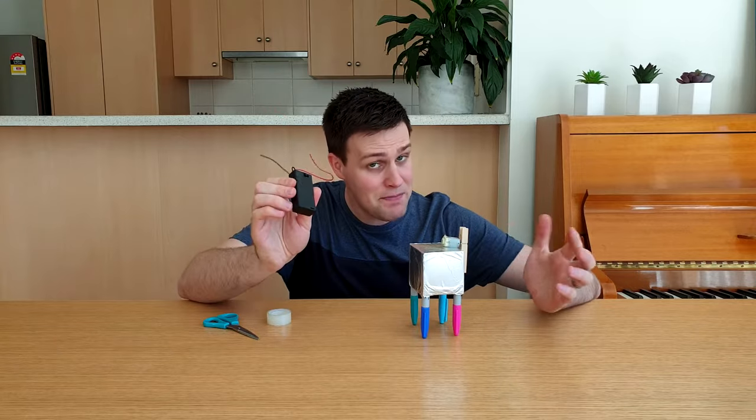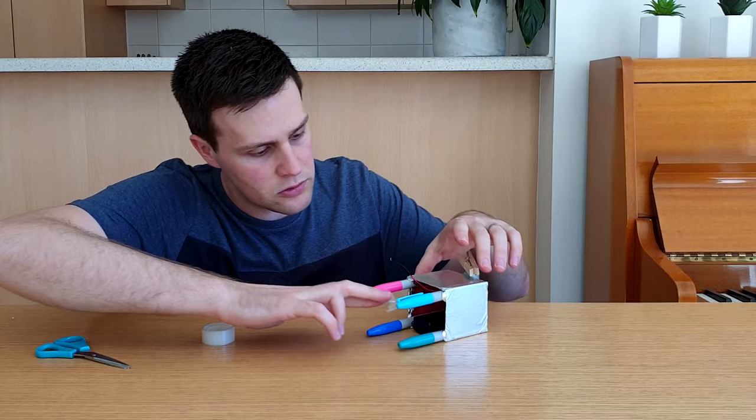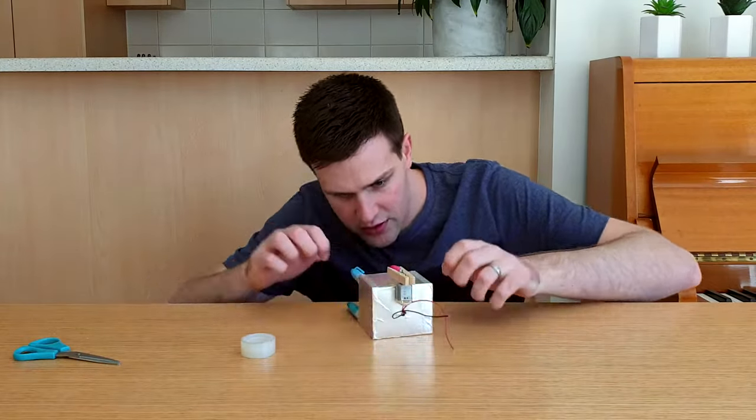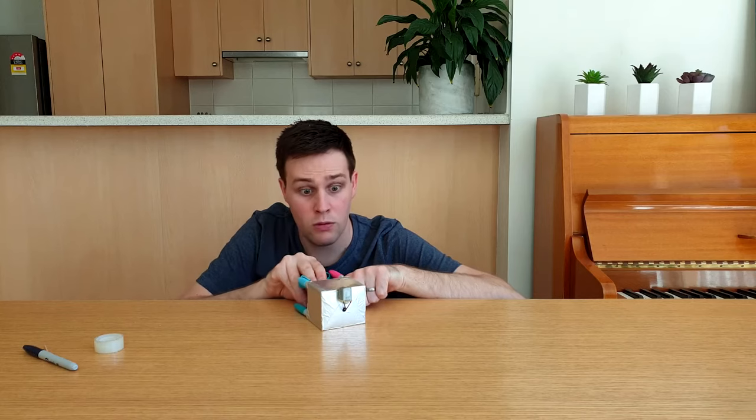The fourth step is to tape the battery pack to the inside of the box. Make sure you tape it to the side of the box that's opposite the motor. Poke a hole through the top of the box and run the cables through it. When you connect these cables up to the motor and turn the battery pack on, it will start spinning the peg.